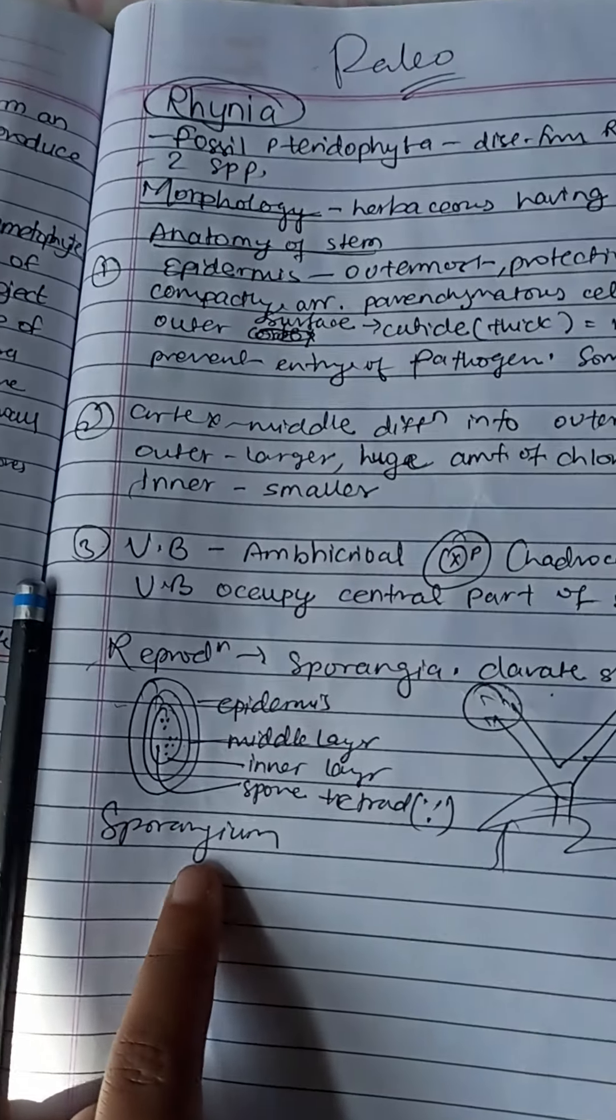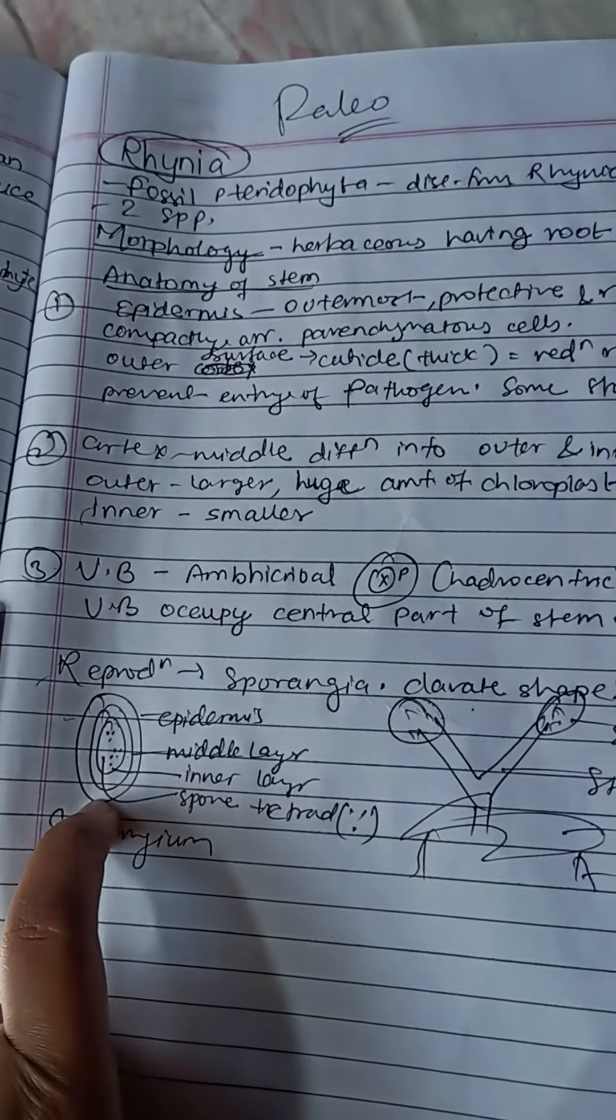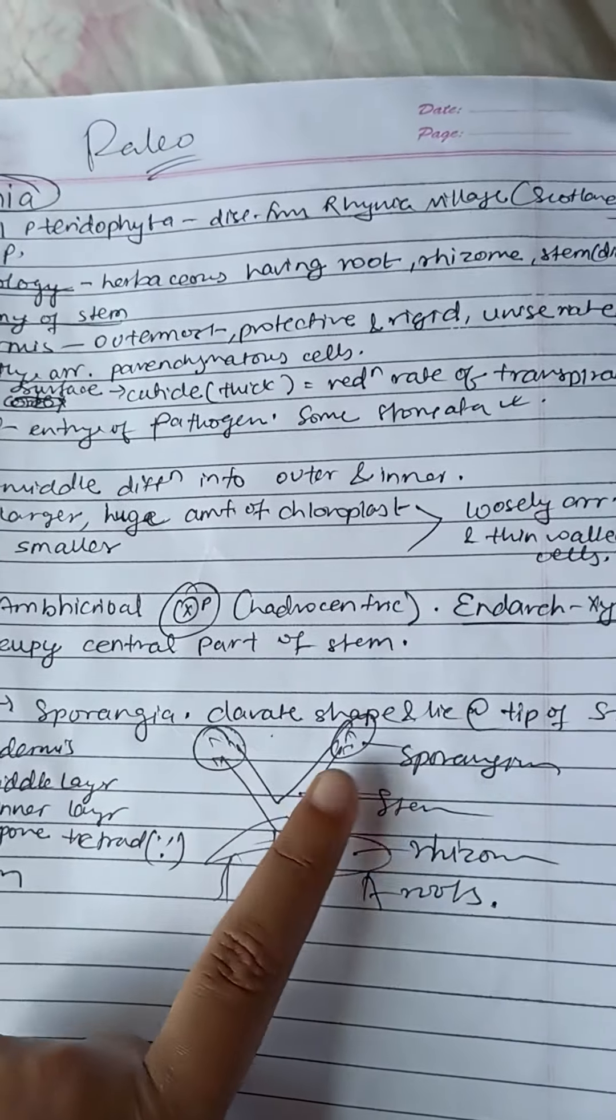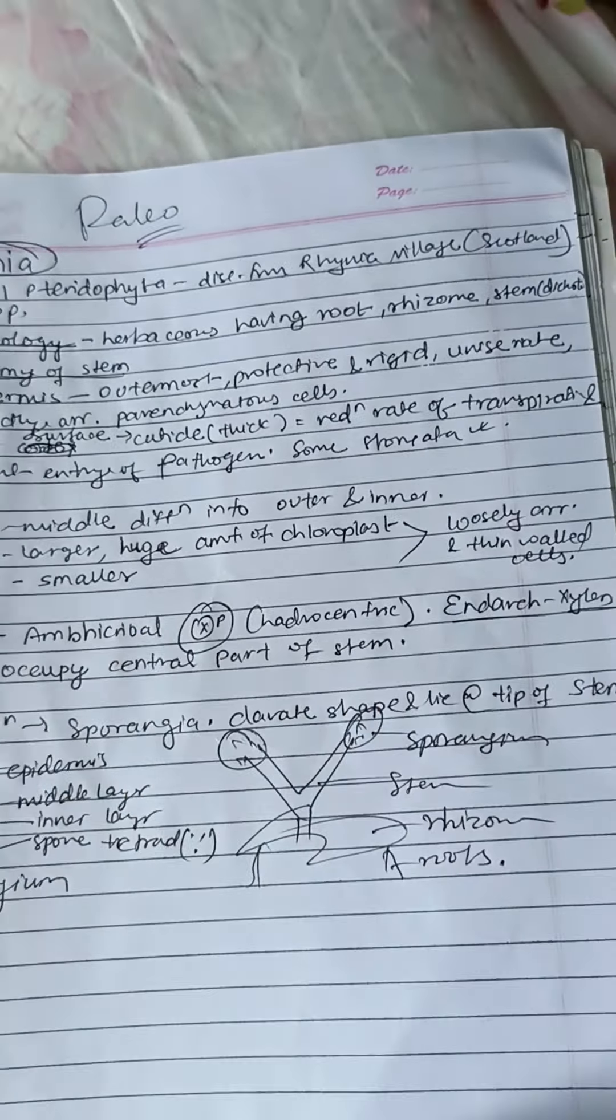So there are epidermis, cortex, inner layer, and the vascular bundle. This is all about Rhinia.